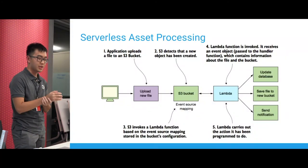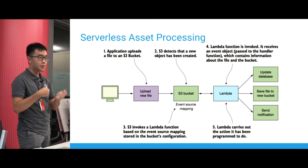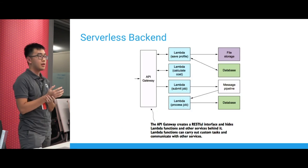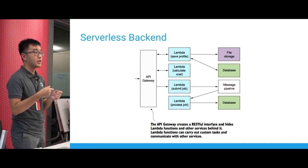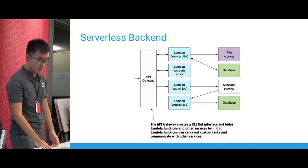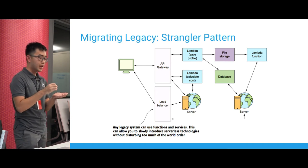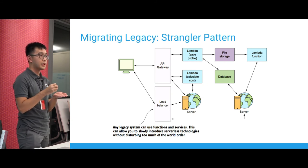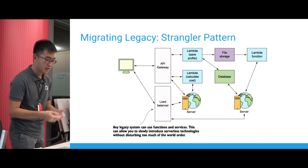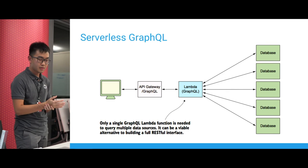What else can we build with serverless? Serverless asset processing: in response to an upload to an S3 bucket, a function is triggered to do some computation. Serverless backends: each RESTful endpoint could be handled by a separate function — for example, a POST /users endpoint handled by a create-user function. There's also the strangler pattern, where you slowly extract individual endpoints from a legacy application and migrate each one to a separate function individually. You can also use GraphQL with a single Lambda function as your GraphQL server.